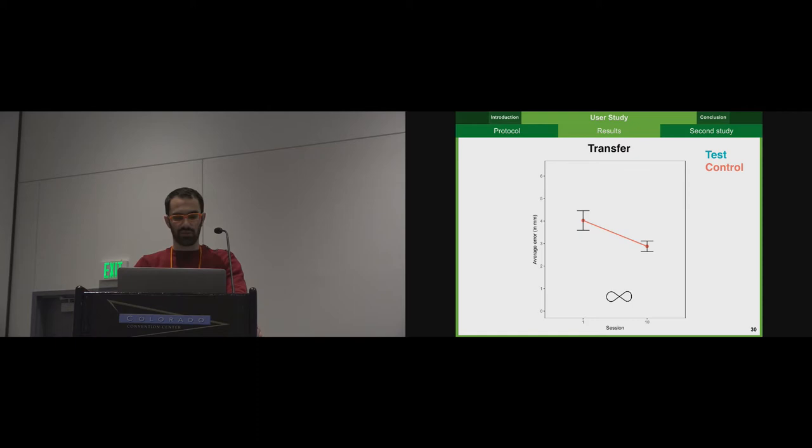This progress of the control group thus accounts for the transfer of tracking skills from the ellipse to the infinity shape. And the test group also has progress, but what is more interesting is that the amount of transfer for the test group is larger, with a steeper slope here on the graph. And it indicates that more than tracking skills, participants also transfer their ability to deal with the latency.